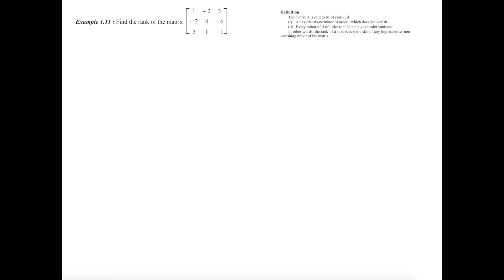Hi y'all. You know example 1.11, we are going to solve this problem. Find the rank of a matrix. The rank definition: a matrix is said to be of rank r if it has at least one minor of order r which does not vanish, and every minor of order r vanishes.